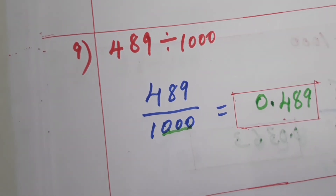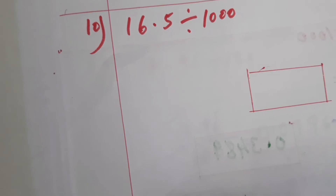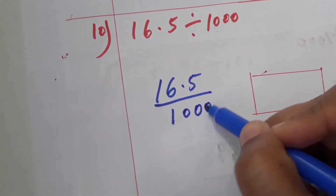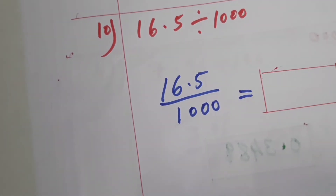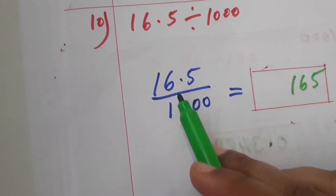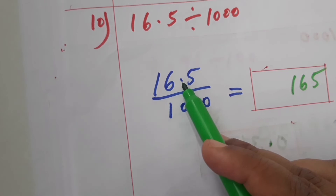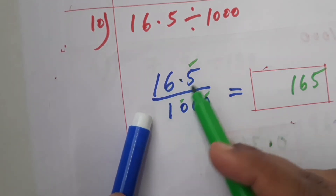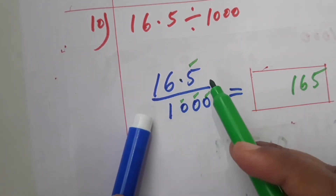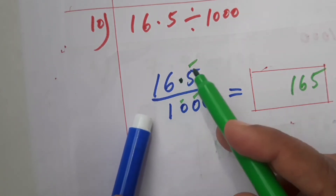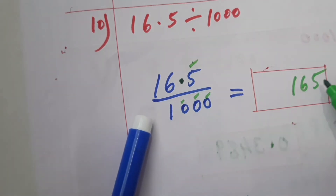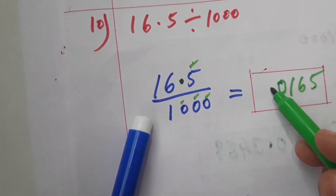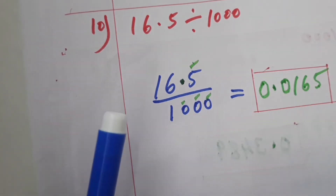16.5 divided by 1000. Write the numerator as 165 without the decimal point. After the decimal point there is one digit, and there are three zeros — total four digits. We only have three digits (165), so we add one leading zero to make it four digits. Count one, two, three, four from the right, place the decimal point and leading zero. The answer is 0.0165.